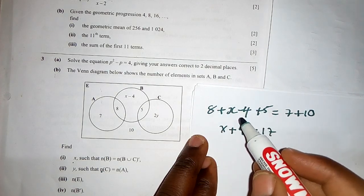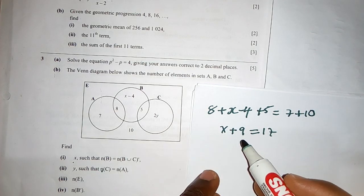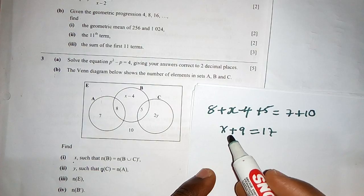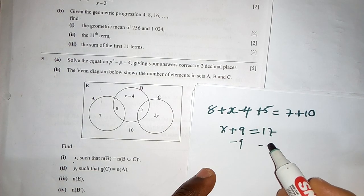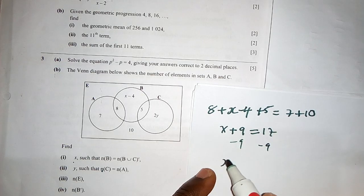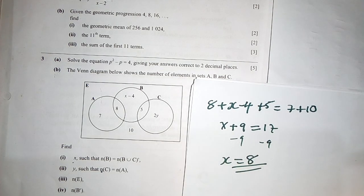So when we add all the numbers here, we have 9, and then this side we have 17. And then after that, we subtract 9 from both sides. So we have x is equal to 8. So the value of x is 8.